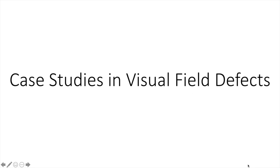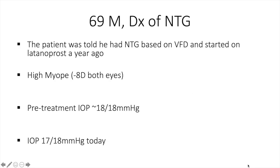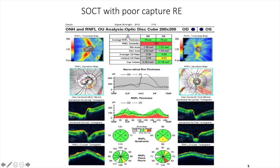Let's talk about some case studies in visual field defects. The first patient is a 69-year-old male diagnosed with normal tension glaucoma based on visual field defects and started on latanoprost a year ago. He is a high myope, minus 8 diopters in both eyes. Pre-treatment pressure was 18 in both eyes, and the pressure on first examination is 17 in the right, 18 in the left. The OCT shows poor capture on the right side, reading peripapillary atrophy as part of the optic nerve — overall, no big red flags.